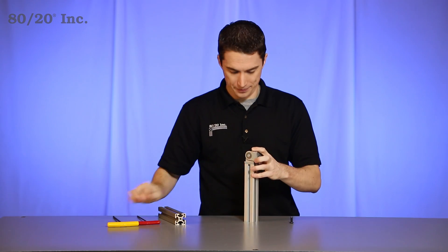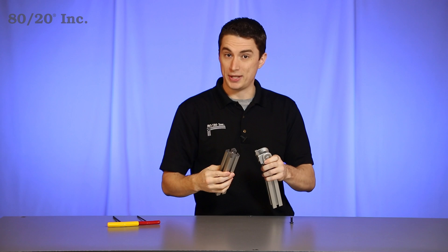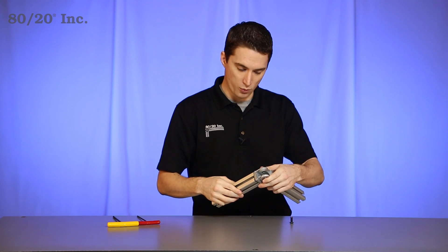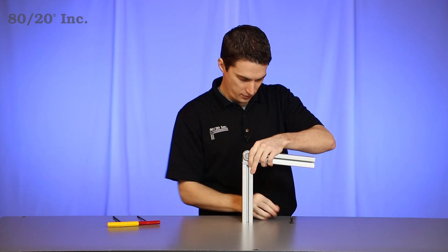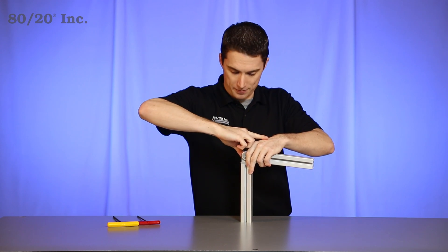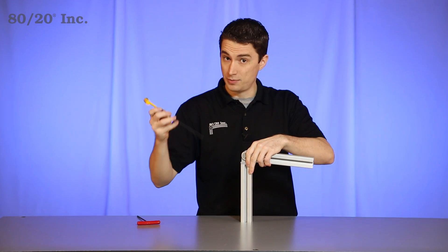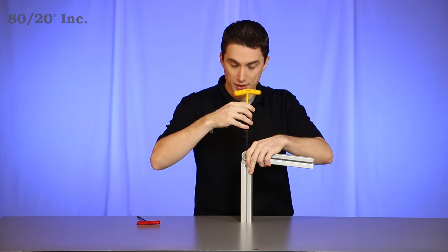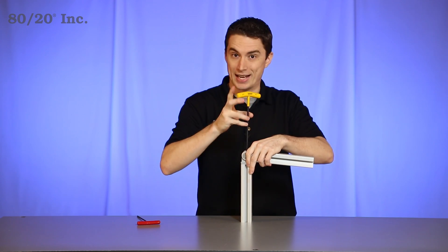Once you have that locked into place, take your other bar and repeat the process. Put the pivot joint right over the end tap, take your bolt and feed it into the end tap, then take your wrench and finish off the pivot joint by tightening it down.